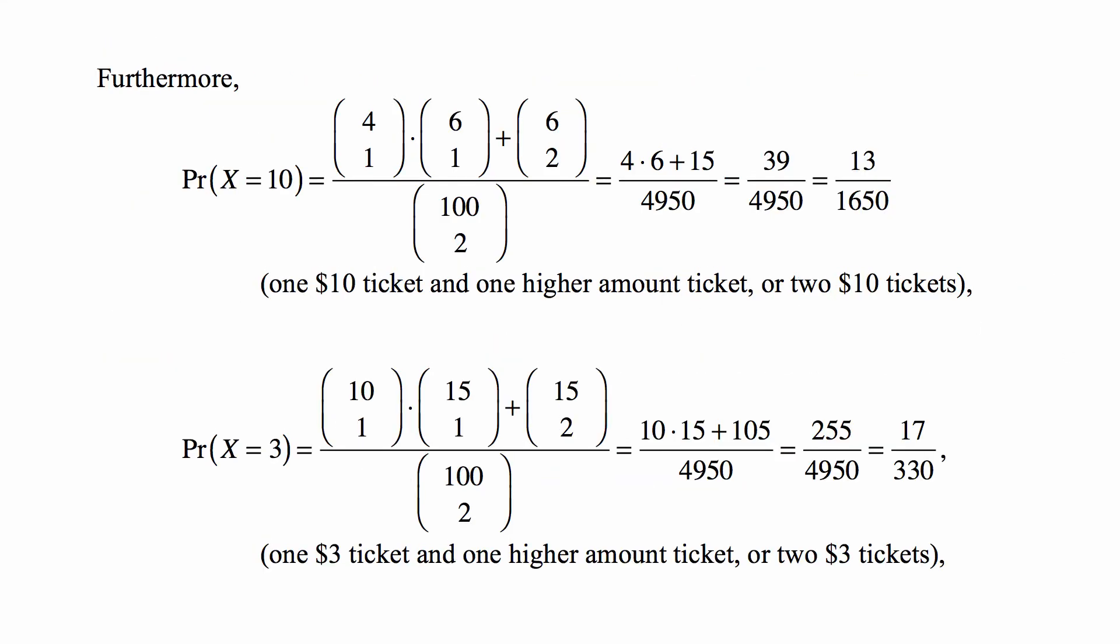Then we ask, what's the probability of X equals 10? Well, we need to choose one $10 ticket and one higher amount ticket, or two $10 tickets. There are four tickets that have higher amounts, three $25 and one $50. So we choose one of those and one out of six $10 tickets. That's 4 choose 1 times 6 choose 1, or we choose two $10 tickets, which is 6 choose 2. And this calculates to be 13 over 1650.